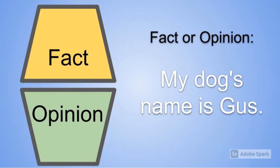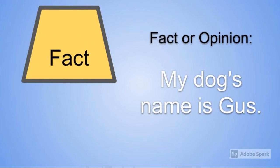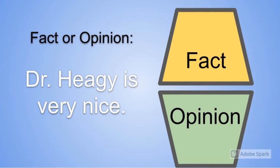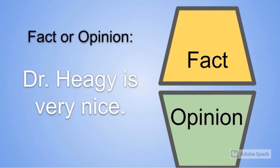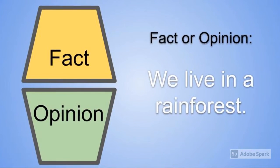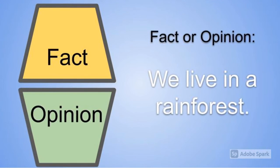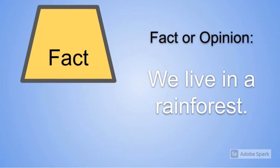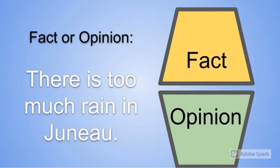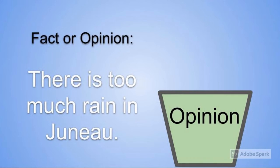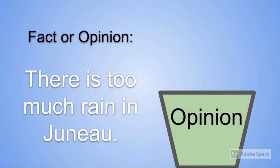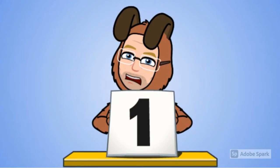Fact or opinion? 'My dog's name is Gus.' If your finger is on fact, you are correct — this is a fact. Fact or opinion? 'Dr. Hagee is very nice.' If your finger is on opinion, you are correct. Fact or opinion? 'We live in a rainforest.' Your finger should be over fact, because this is a fact. Fact or opinion? 'There is too much rain in Juneau.' On this one, it is indeed an opinion — even if everybody agrees with it, it is still just an opinion.